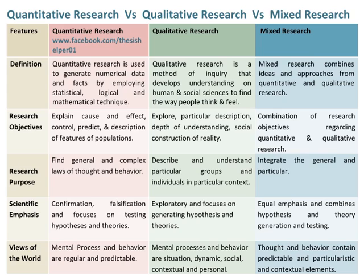Scientific emphasis of quantitative research is based on confirmation and falsification, and focuses on testing hypotheses and theories. Scientific emphasis of qualitative research is exploratory and focuses on generating hypotheses and theories. Scientific emphasis of mixed research places equal emphasis and combines hypothesis and theory generation and testing.